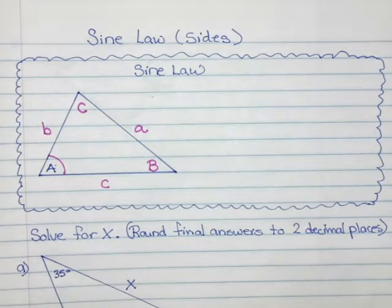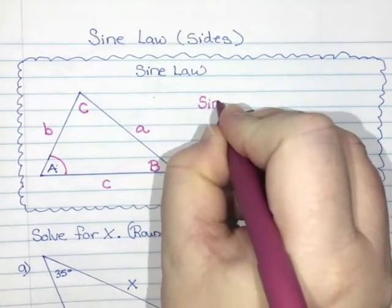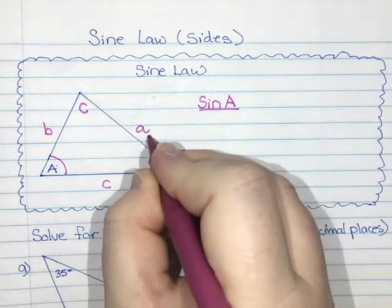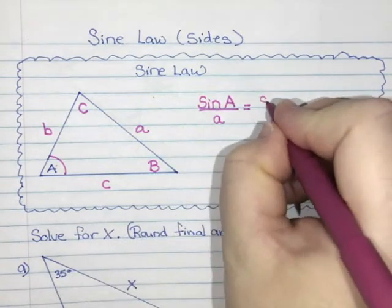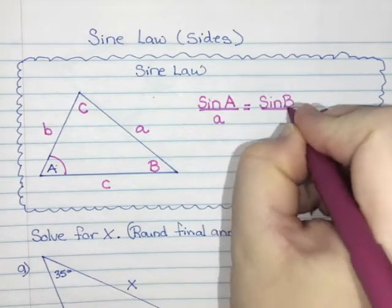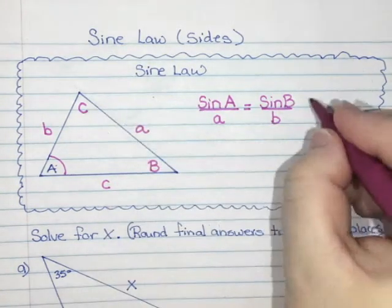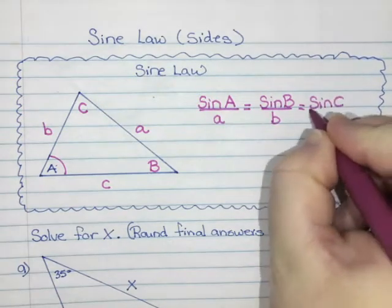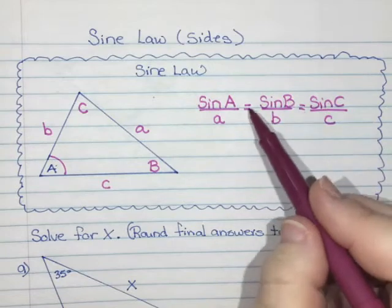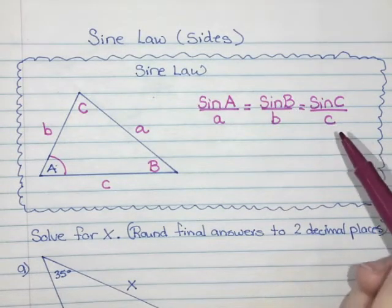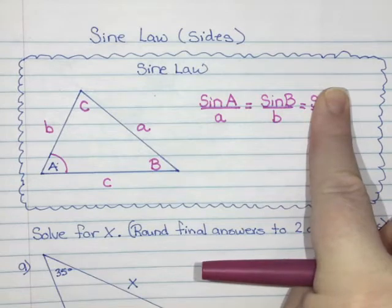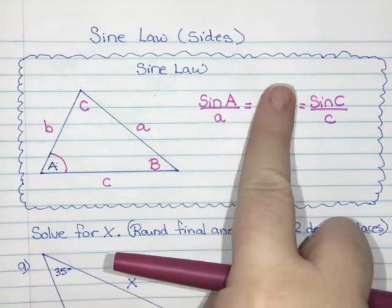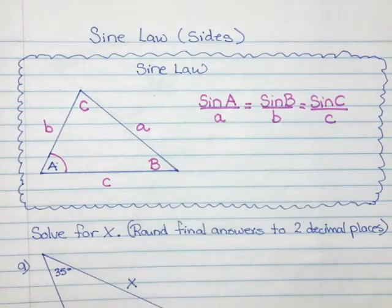Sine law is a ratio of opposite sides and their angles. The rule says that sine of angle A divided by side a gives a number, and you get the same number if you divide sine of angle B by side b, and also sine of angle C by side c. You cannot solve an equation with three parts, so we use two of these at any time.